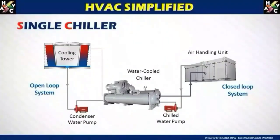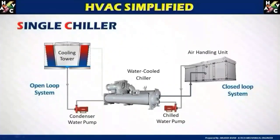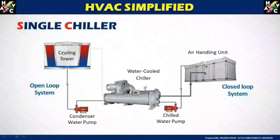Here is an example of a single chiller. In this picture you can see a closed loop circuit which has water cooled chillers. One side is connected with the chilled water pump to the air handling unit and back to the evaporator — this side is known as the closed loop chilled water system. The other side is known as the condenser water pump, where it is connected to the cooling tower and to the condenser.